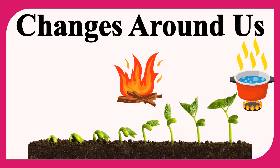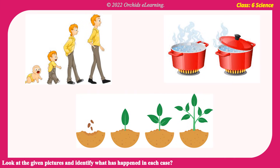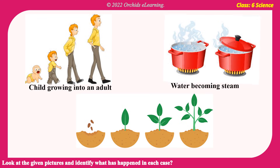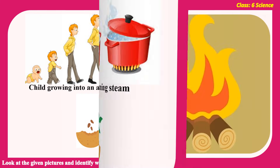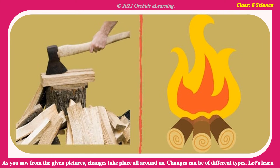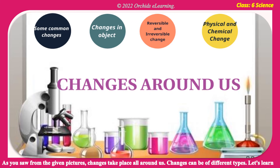Changes Around Us — Class 6 Science. Look at the given pictures and identify what has happened in each case. A child growing into an adult, water becoming steam, and a seed growing into a plant. As you saw from the given pictures, changes take place all around us. Changes can be of different types. Let's learn about it today.